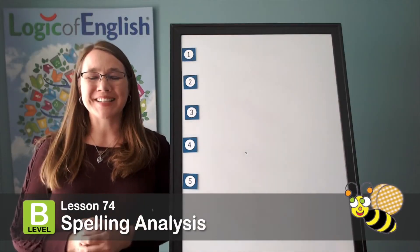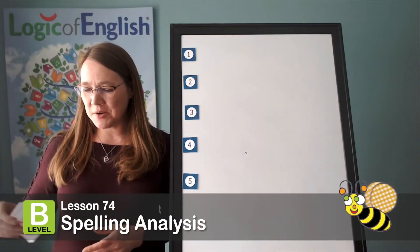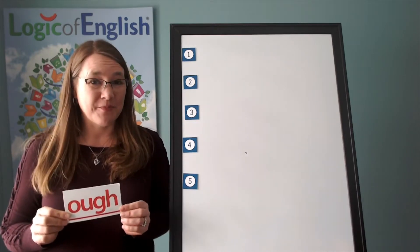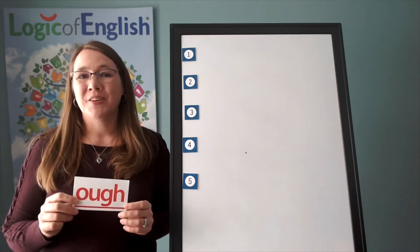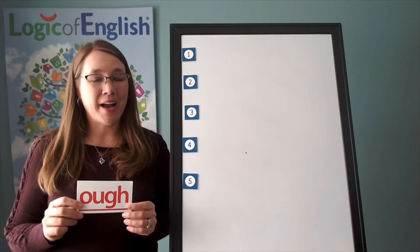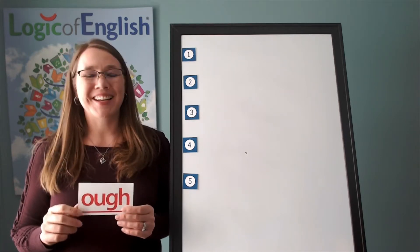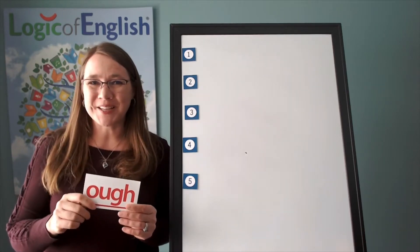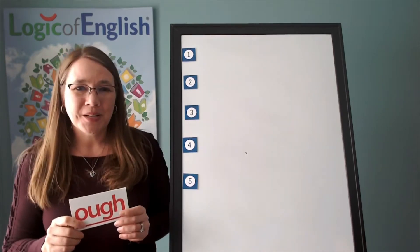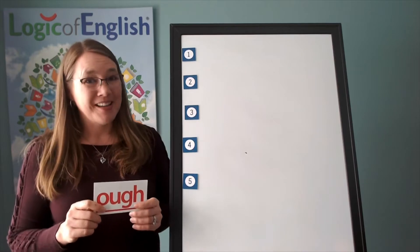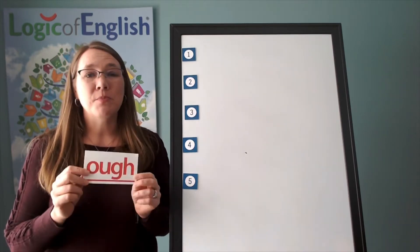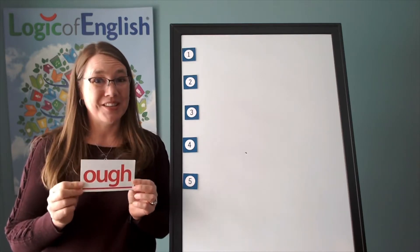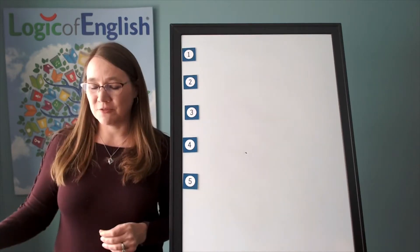It's time for spelling analysis and today we get to have a word with my favorite phonogram. Let's say the sounds together: aw, oh, oo, ow, off, off. Let's say it again: aw, oh, oo, ow, off, off. This is the phonogram with the most sounds, and one of our words is going to use this phonogram, so be listening for it.